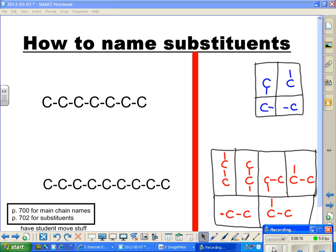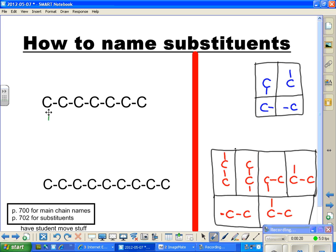So as we look at this guy, I'm going to number the chain. What do we call this seven-chain? This is heptane. So heptane is the name of the chain.